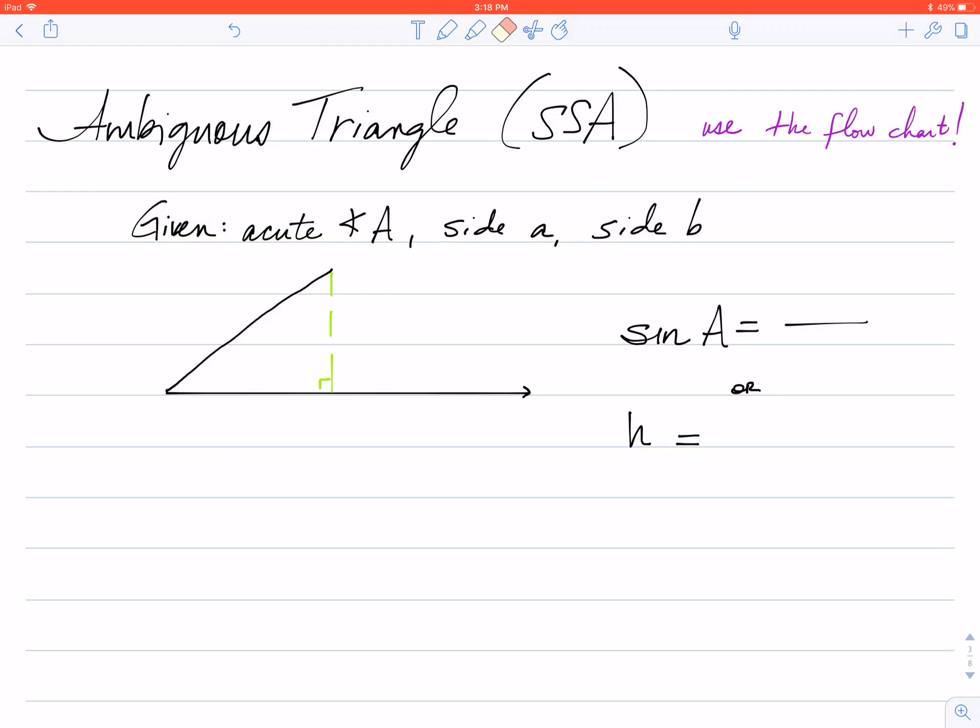So what I'm looking at here, the ambiguous triangle is the one where we have side side angle. I have two sides that are given to me and an angle, but that angle is not between the two sides. So I've started drawing a picture. I don't have the whole entire triangle drawn.